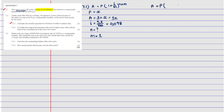So substituting into the formula: A equals P times (1 plus i divided by M) to the power N times M. We substitute: 3X equals X times (1 plus 0.098 divided by 1) to the power N times 1. We take X to the other side — 3X divided by X equals (1 plus 0.098) to the power N, and N times 1 is just N.